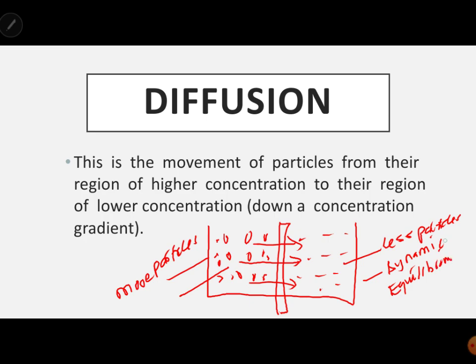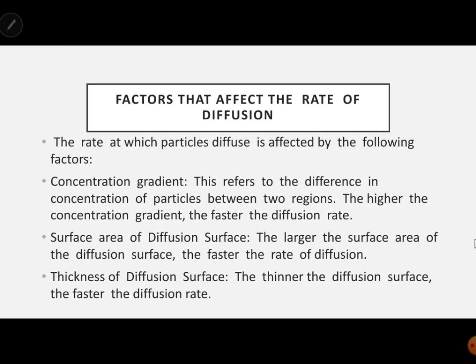Dynamic equilibrium is the state at which the particles in two regions are equal. Now let's look at the factors affecting the rate of diffusion.